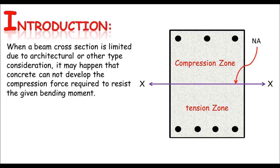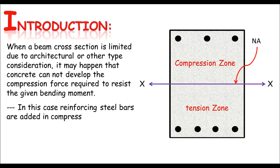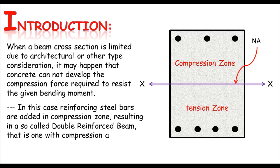When steel is used in both the tension and compression zone, the beam is known as a double RC beam. This happens when the beam cross-section is limited due to architectural or other considerations, and the concrete cannot develop the compressive force required to resist the given bending moment. In such cases, reinforcing steel bars are added in the compression zone as well, which is known as a double reinforced concrete beam — one with both compression and tension reinforcement.